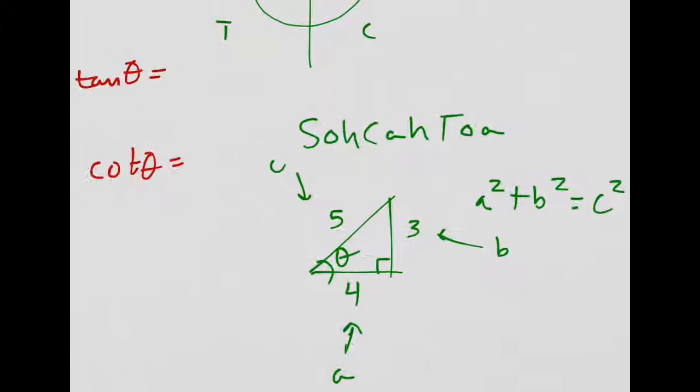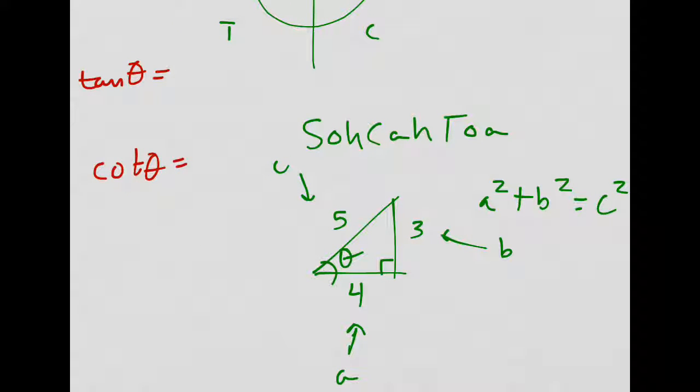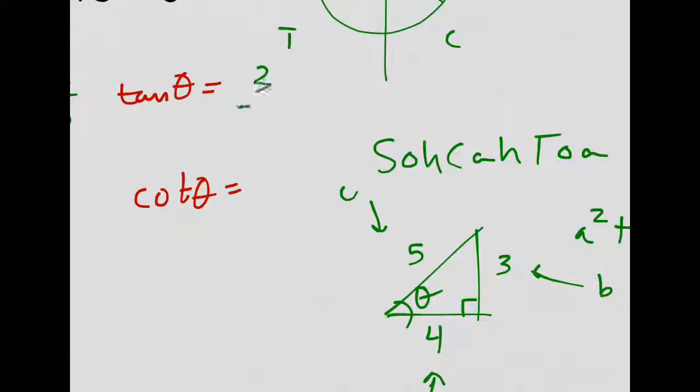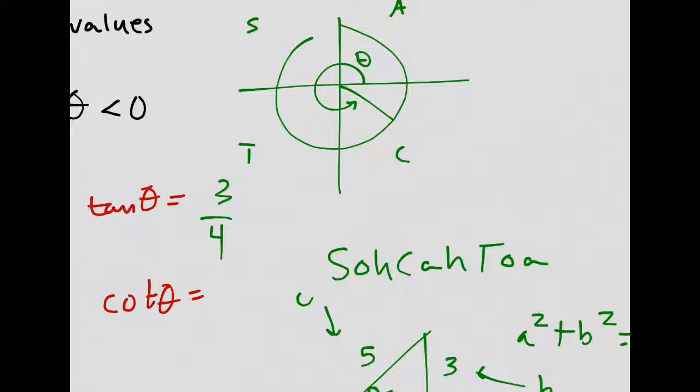Tangent is opposite over adjacent, so that would be 3 over 4. Would it be positive or negative? Well, cosine is the only thing positive here. Tangent is negative, so I'd say negative 3 over 4.